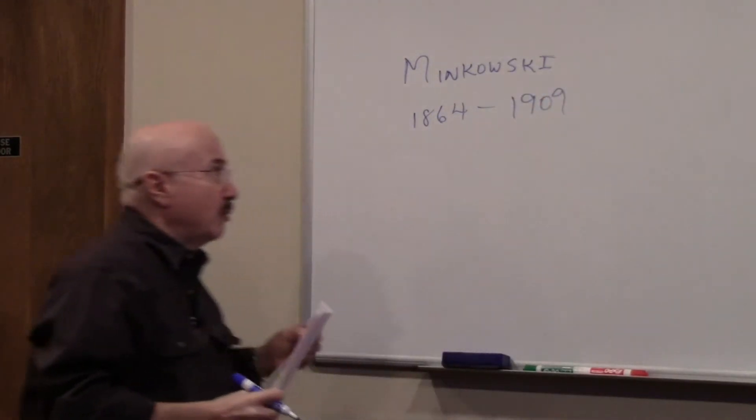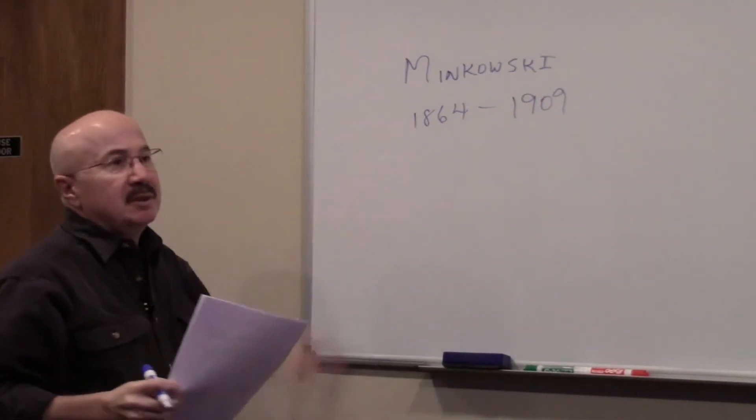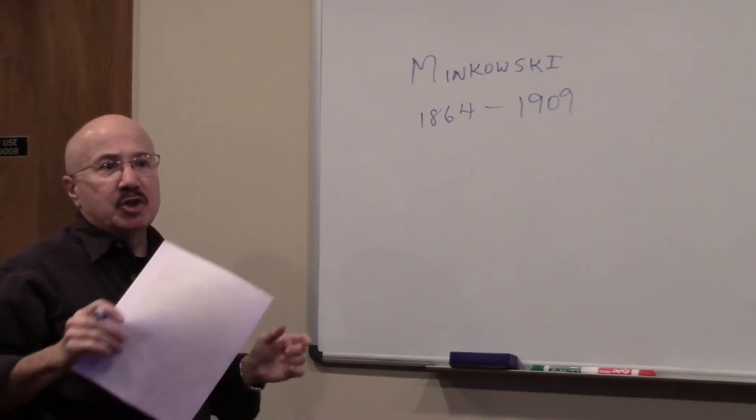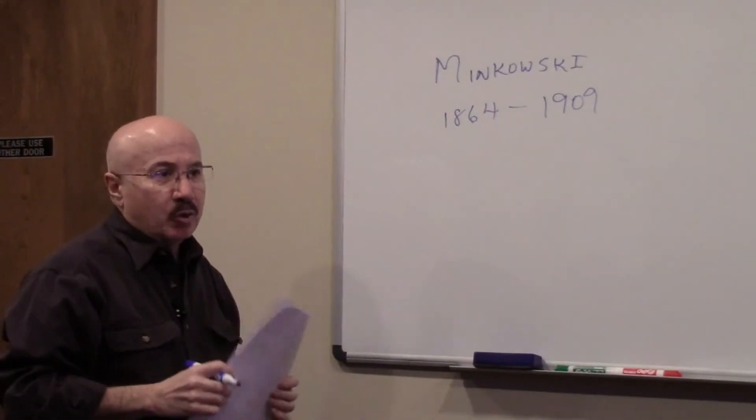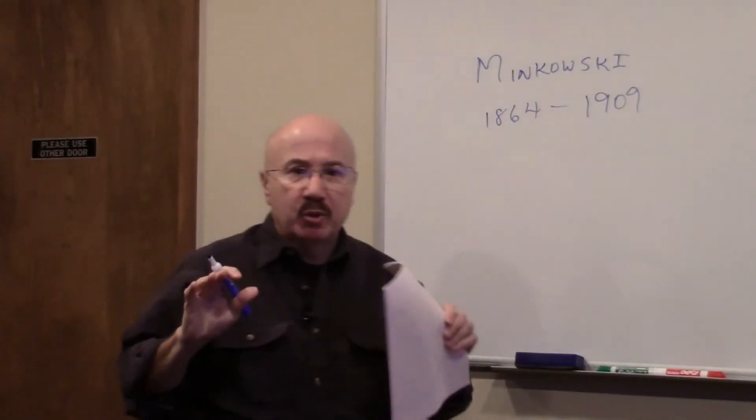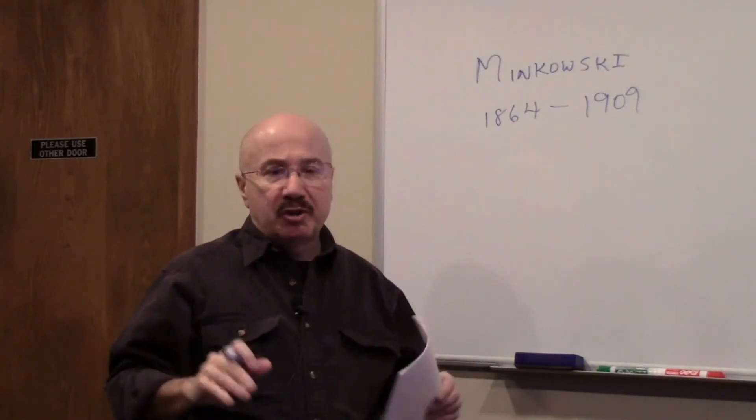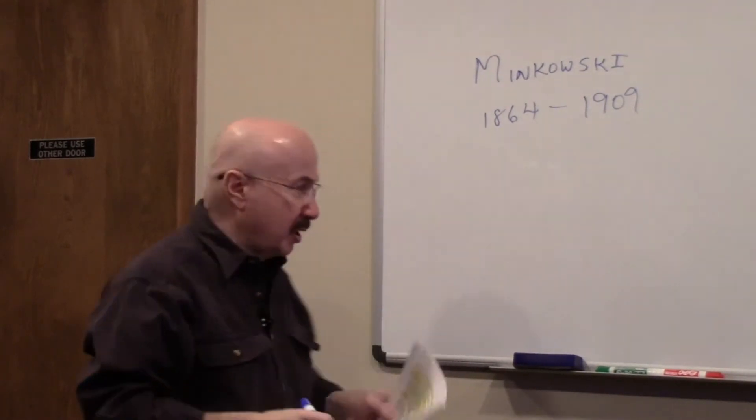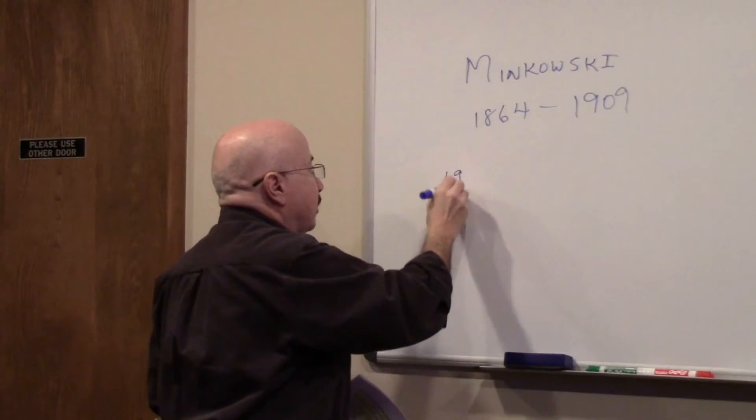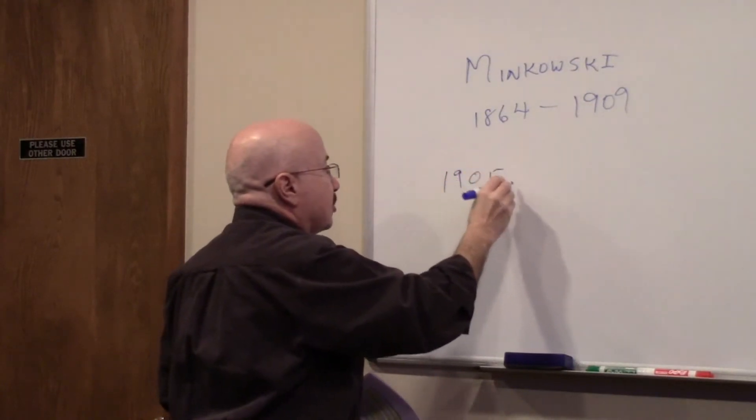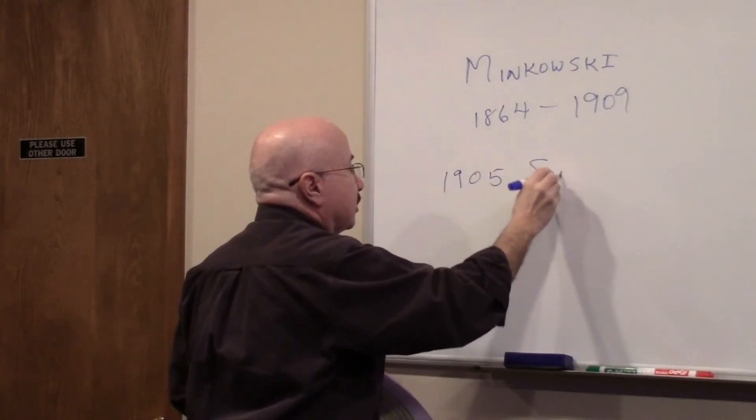Now, the thing about Herman Minkowski is that he had Einstein as a student. And when Einstein first came out with his special theory of relativity, and that was in 1905. So in 1905, Einstein comes out with the special theory of relativity.